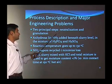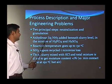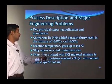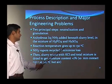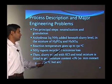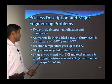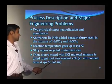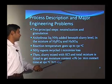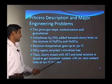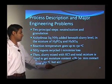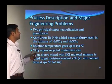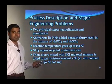The two principal steps are neutralization and granulation. Anhydrous liquid ammonia is added beneath the slurry level in a mixture of phosphoric and sulfuric acid. The reaction temperature goes up to 130 degrees Celsius. Ammonium vapour is recycled to minimize loss. Then the slurry mixture with KCl is dried to get moisture content less than 1 percent by 10-minute contact with 150 degree centigrade hot air.